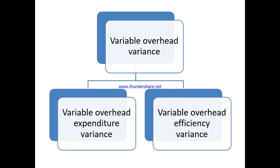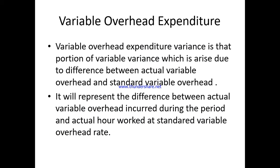Variable overhead variance is bifurcated into sub-variants: number one is known as variable overhead expenditure variance, and the second part is known as variable overhead efficiency variance.